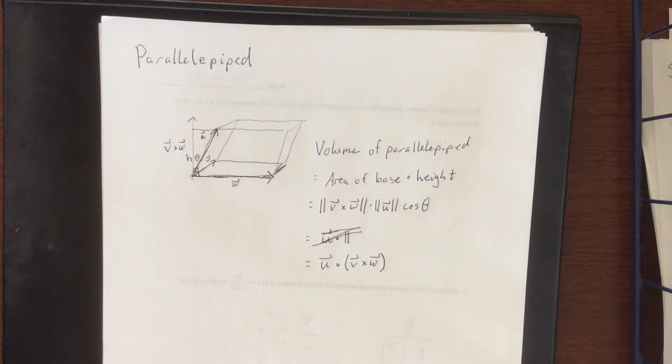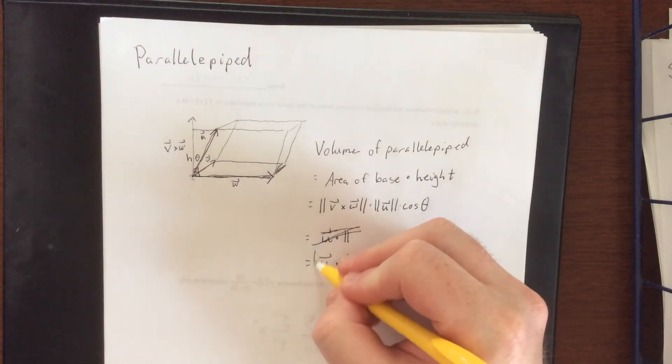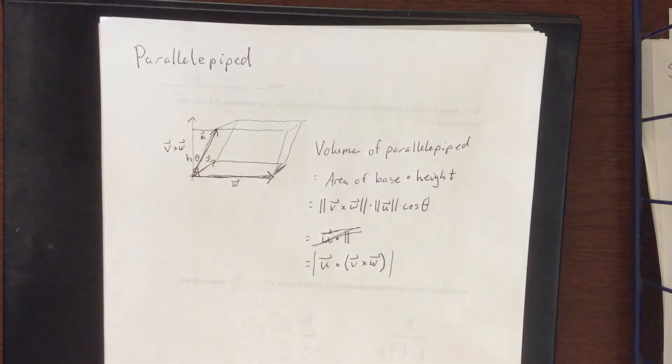Now this of course assumes that this quantity is positive, but we know from our study of the dot product that that's not necessarily true. So what we're going to do is throw some absolute values around this.